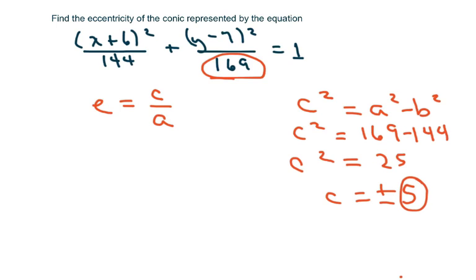We're just going to use the 5, the positive 5. We know a is the square root of 169, which is plus or minus 13. So our eccentricity is 5 over 13. If you recall, eccentricity represents the flatness.